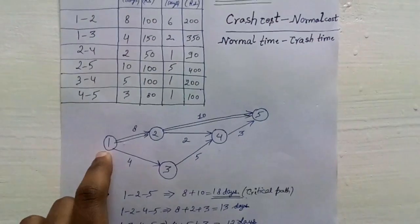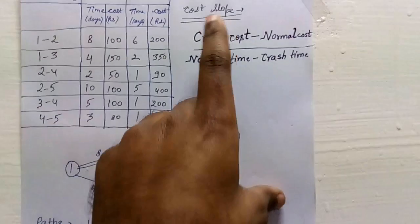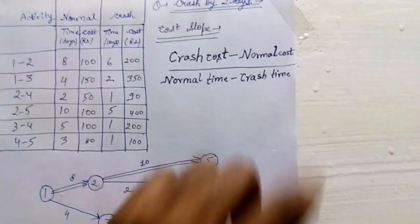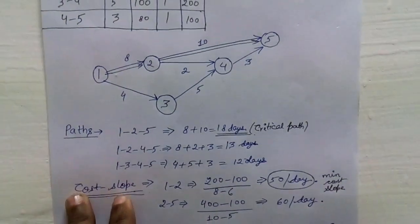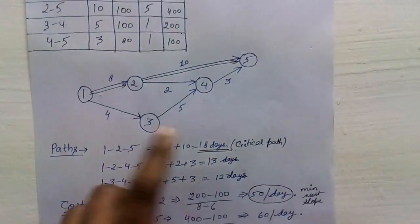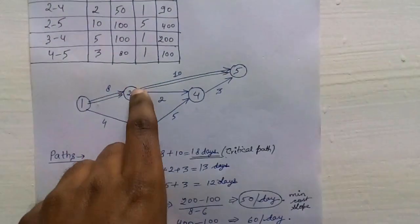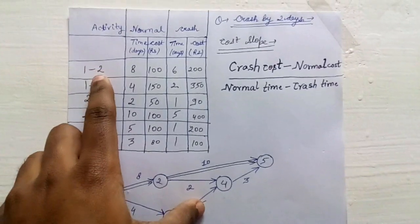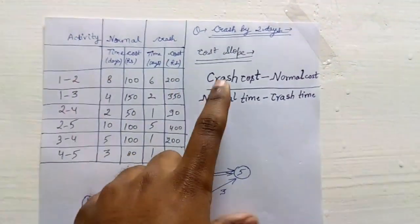The cost slope formula is: (Crash Cost − Normal Cost) / (Normal Time − Crash Time). Since 1 to 2 to 5 is the critical path, the activities on it are 1-2 and 2-5. Cost slope for activity 1-2 is: (200 − 100) / (8 − 6) = 100 / 2 = 50 per day.